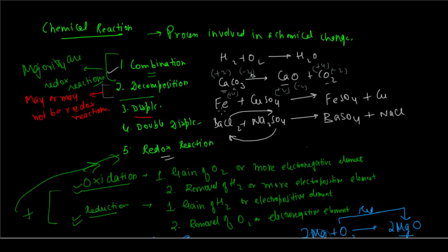Next, we come to displacement reactions. Take the example of iron reacting with copper sulfate. Iron here has oxidation number 0. Copper in copper sulfate has oxidation number +2, and the sulfate ion has -2. In the products, iron has +2 oxidation number and copper has 0 oxidation number. The oxidation number of iron is increasing from 0 to +2, which is oxidation. And copper's oxidation number is decreasing from +2 to 0, which is reduction. So copper sulfate gets reduced to copper. This is a redox reaction, and in general, a majority of displacement reactions are redox reactions.